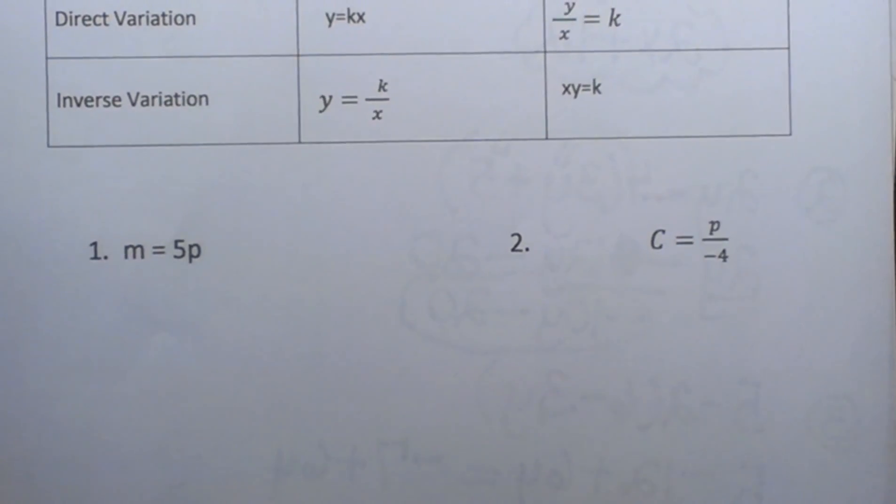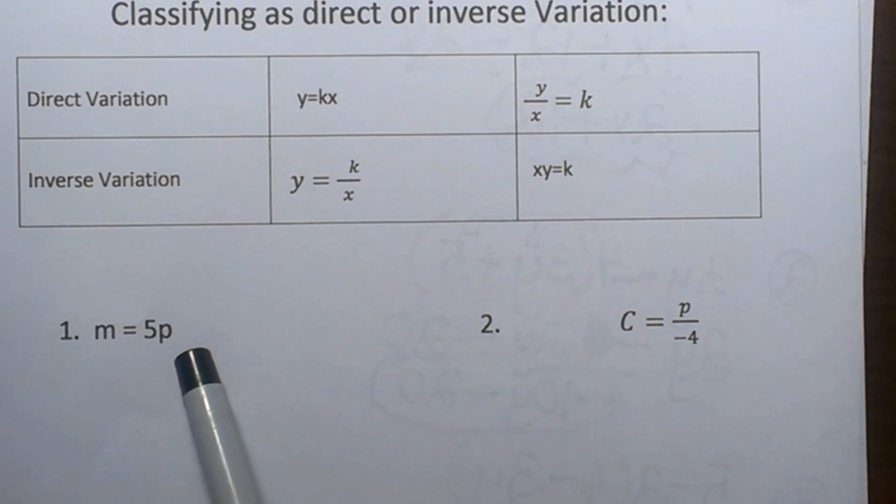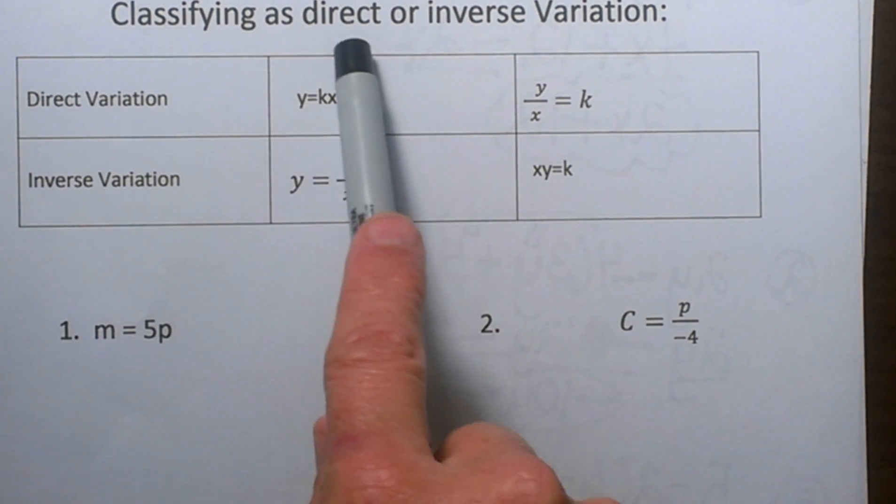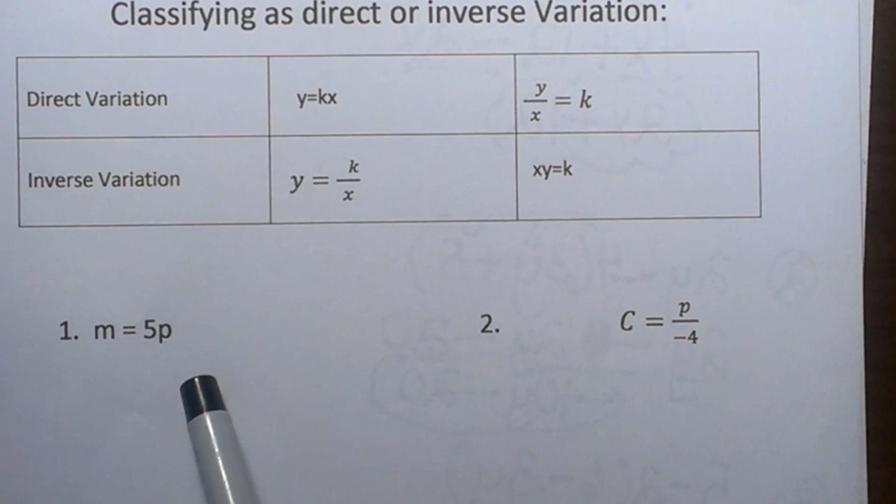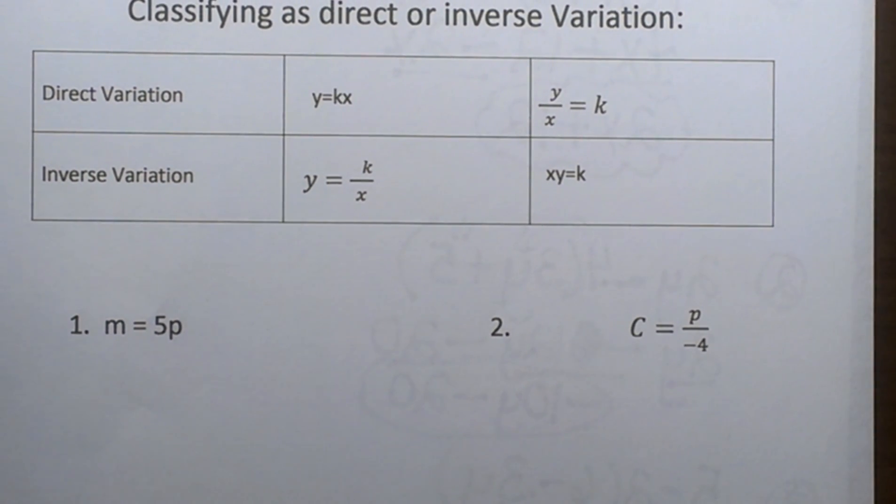So let's look at a couple examples and see if we can use our chart to help us. The first one is m equals 5p. m and p are the two variables just like x and y, so let's see which form we think that matches. To me it looks like this, but just to confirm, what I like to do is get the two variables on the same side.